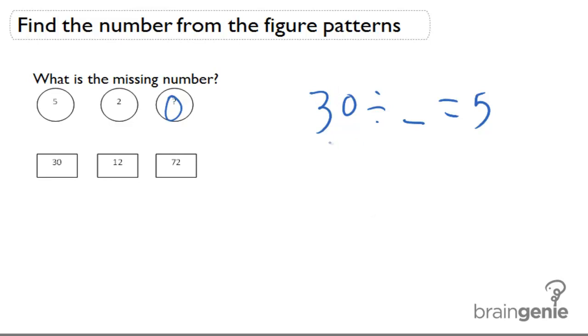So what I could also do for this one to figure out the pattern is I can do 30 divided by 5, so I can see what the other number is. So here's the number — I just switched to the blanks.